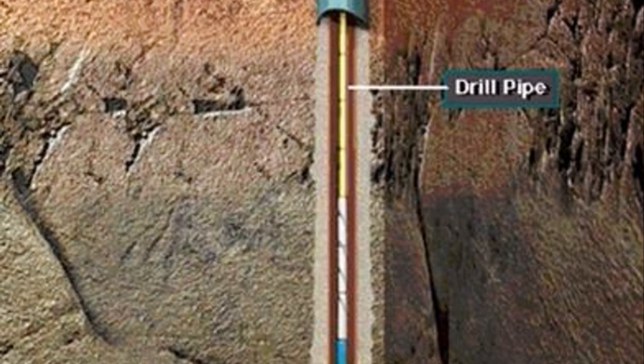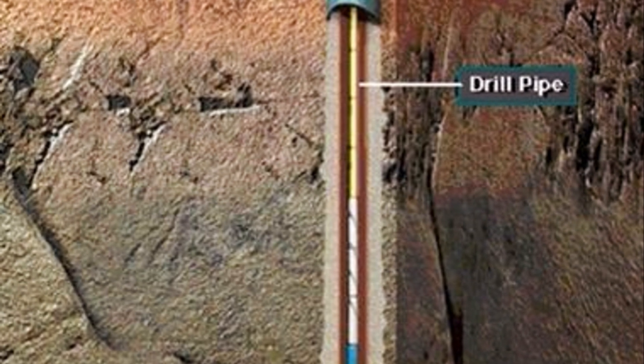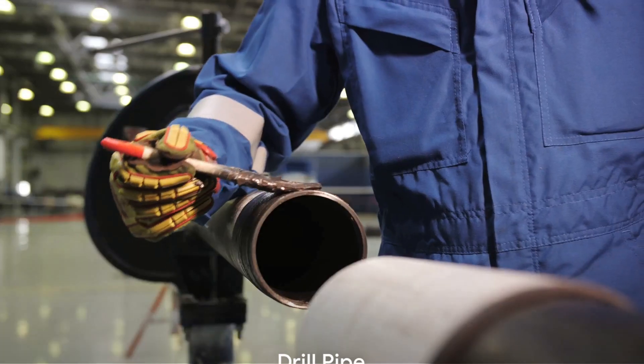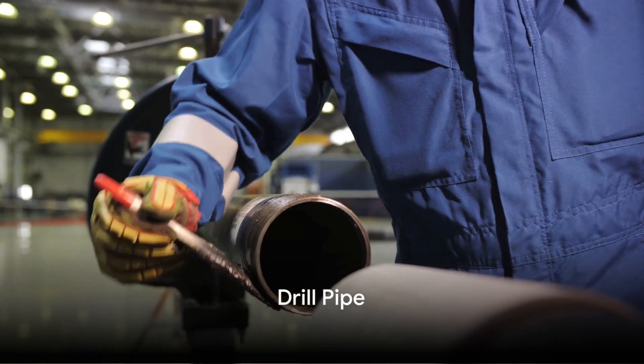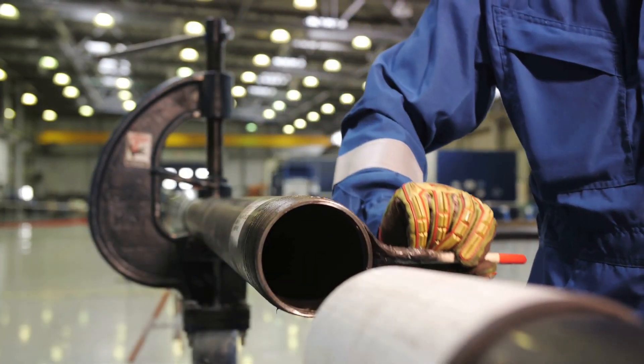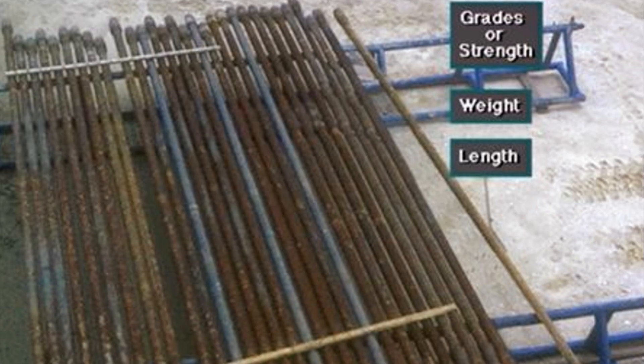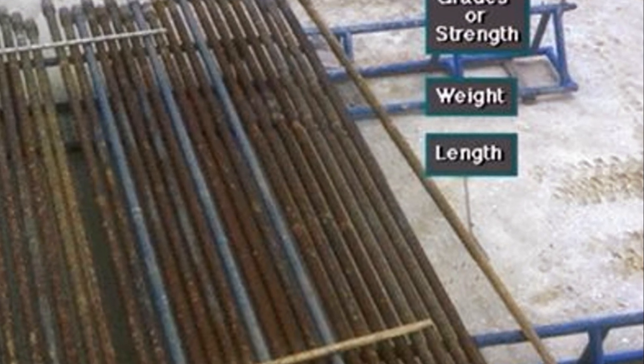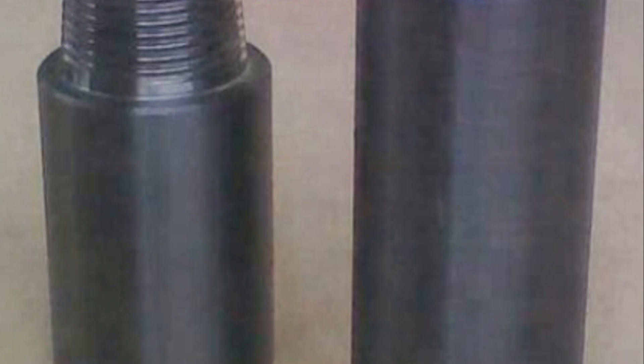Each joint of drill pipe comprises the pipe body and the tool joint, which connects the sections of drill pipe. At one end of the pipe is the box, with the female end of the connection, while the male end of the connection — known as the pin — is at the other end of each length of drill pipe. Tube OD, nominal weight, pipe grade, type of tool joint, thread connection, and classification generally describe drill pipe components.